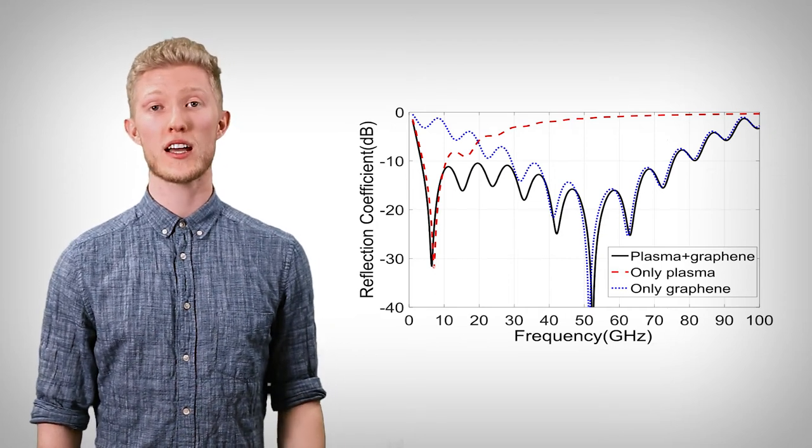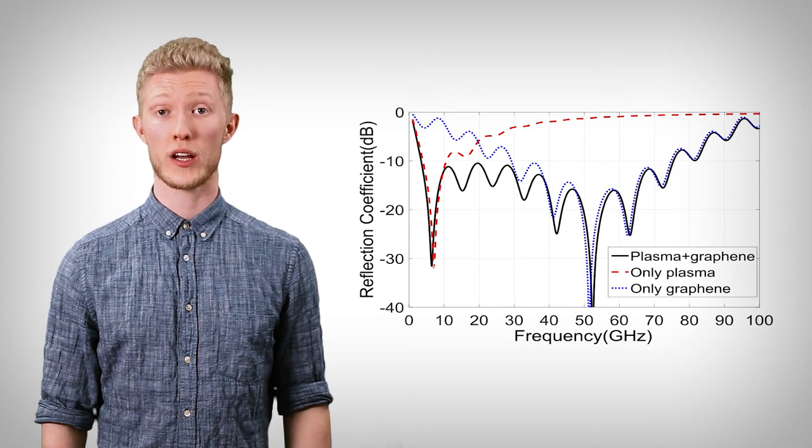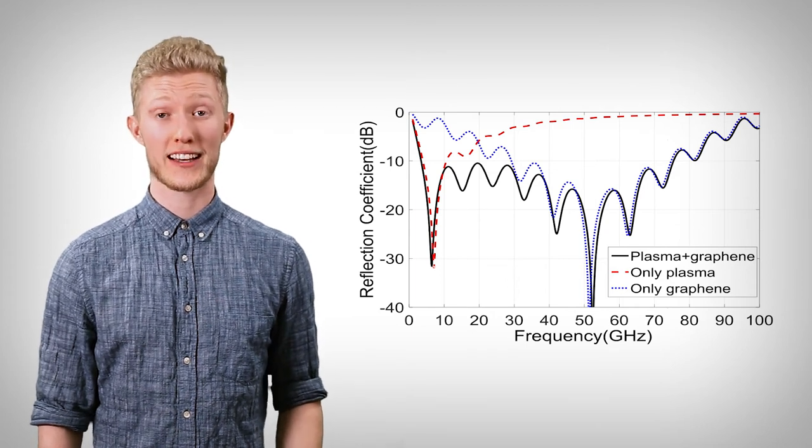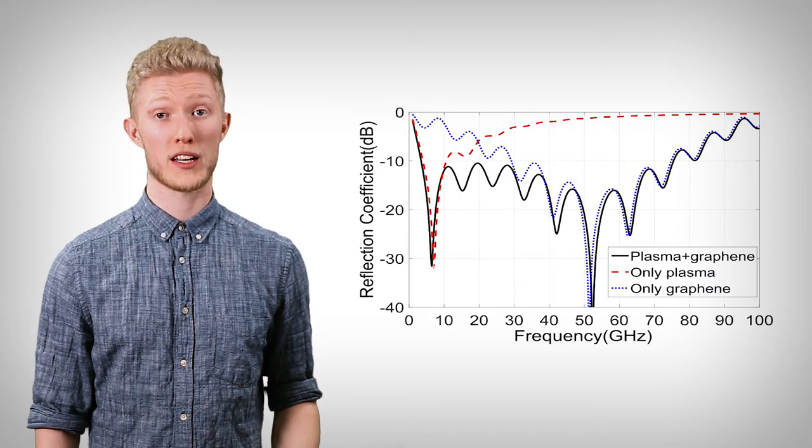At high frequencies, the weakly ionized plasma subjects the electromagnetic wave to absorption as well as scattering. And at low frequencies, graphene's attenuation properties allow a broadband absorber to be achieved. The main limitation of plasma RAS currently is the required power.